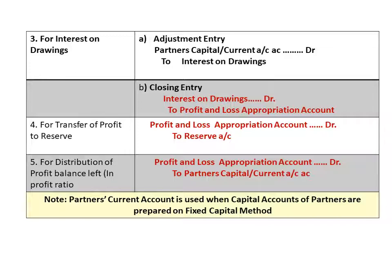And finally, for distribution of profit, the profit left is divided in the profit sharing ratio and the entry for distribution is profit and loss appropriation account debit to partners' capital or current accounts.